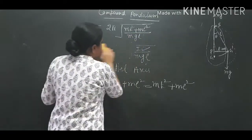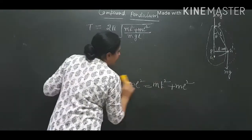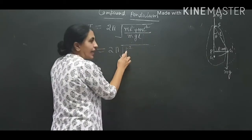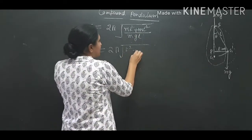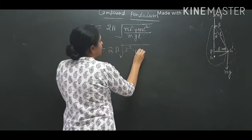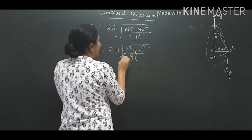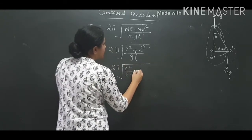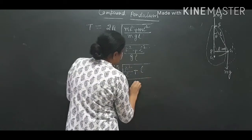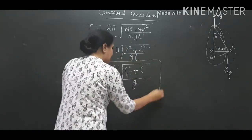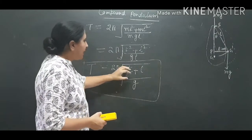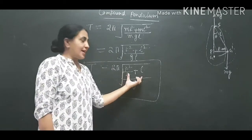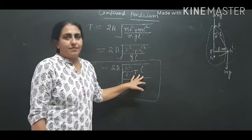Substituting into the time period formula: T = 2π·√((mk² + ml²)/mgl). The mass m cancels, giving T = 2π·√((k² + l²)/gl), which can be written as T = 2π·√((k²/l + l)/g). This is the time period for a compound pendulum.